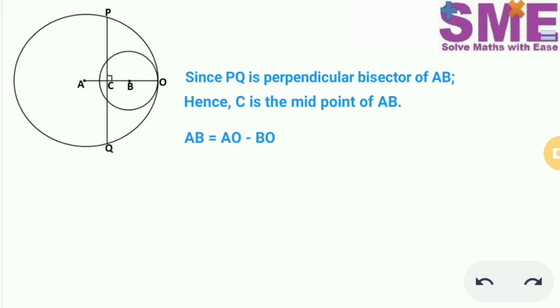Now in this figure we can see that AB is equal to AO minus BO. Now we know that AO is the radius of the outer circle and BO is the radius of the inner circle. So we put the values of AO as 5 and BO as 3, we get the length of AB as 2 cm.